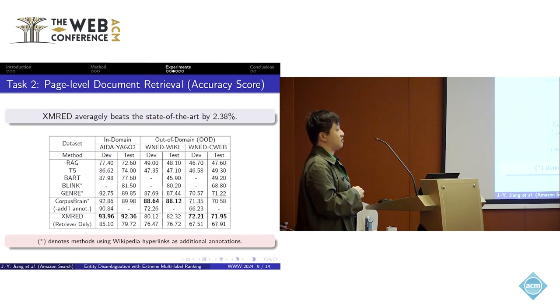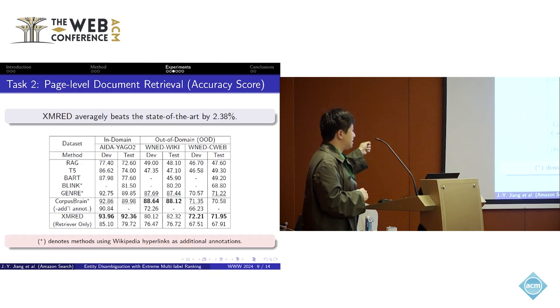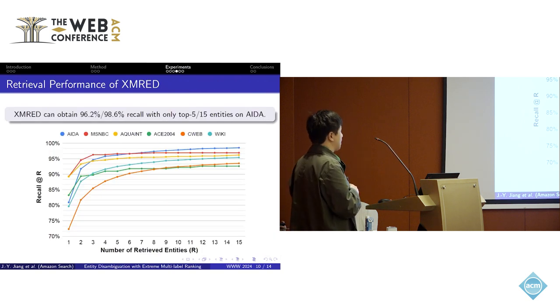Similarly, in the second task of page-level document retrieval, we can see the framework proposed by our paper on average beats by 2.78% in both the in-domain and out-of-domain tasks. We can also see that in this task with only retrieval, we can still get very competitive performance. So it's interesting how we can do it by this retriever. We conducted a study about the retrieval performance on the recall metric over different numbers of retrieval entities from 1 to maybe 15. We can see with only about top five entities retrieved by our method, we can achieve more than 96% of the recall score. This means that if we just have an oracle ranker method, we only need to select the top five entities selected by our retriever, then we can get the correct answer. This is also the upper bound of the method that can get in the final accuracy.